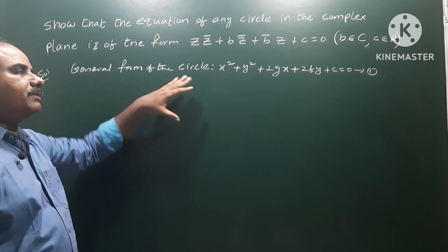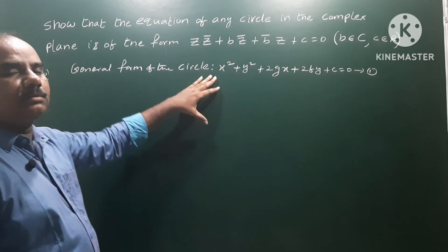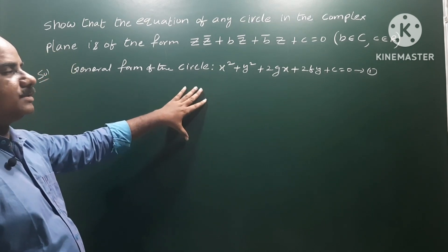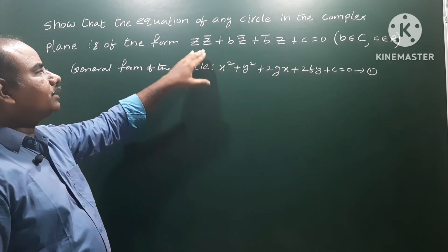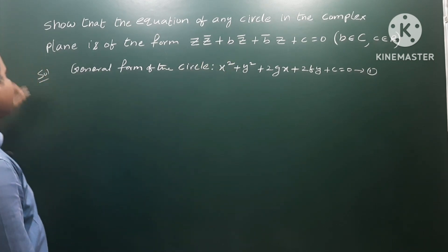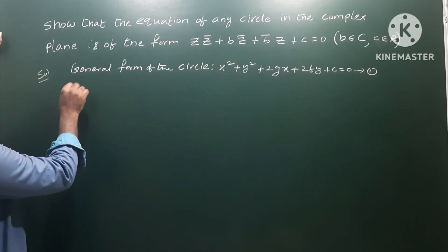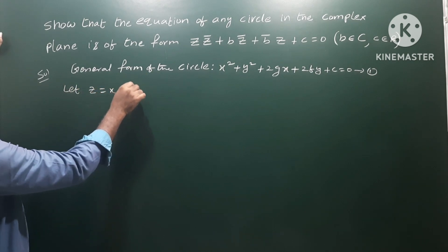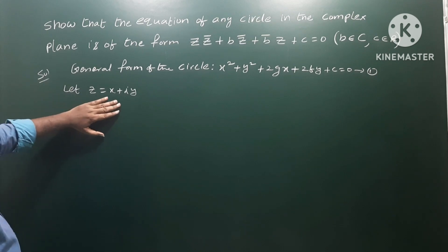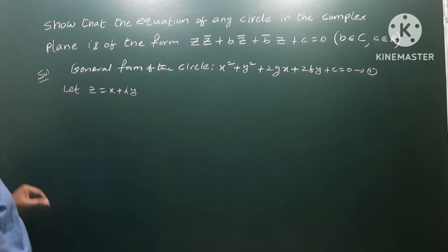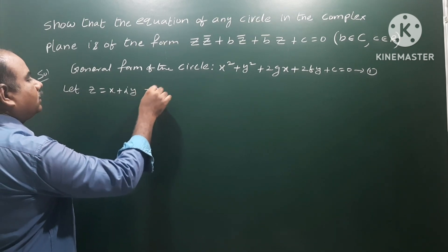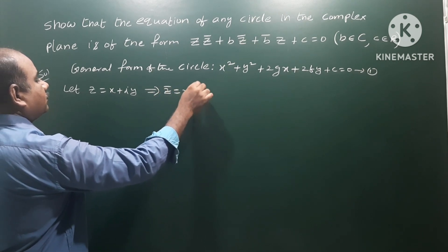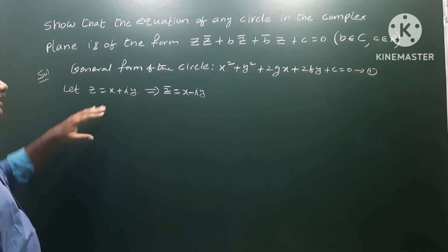That is the general form of the circle equation in the coordinate plane. Now in the complex plane we indicate points using complex numbers. So let z = x + iy, which is a complex number, and z̄ (its conjugate) means x − iy.